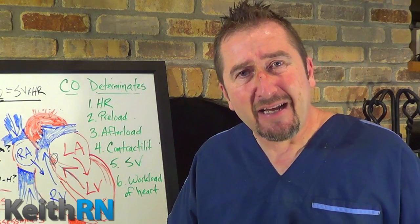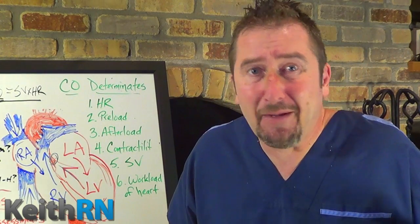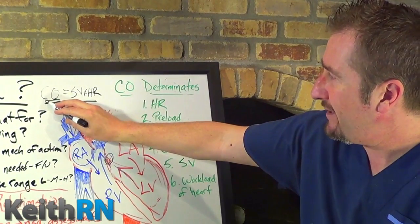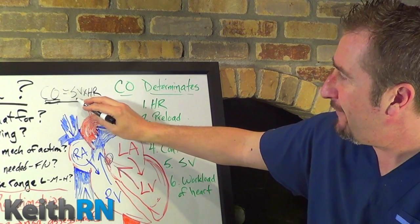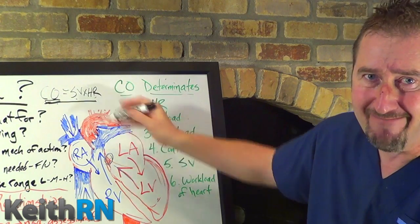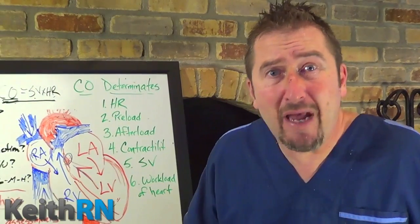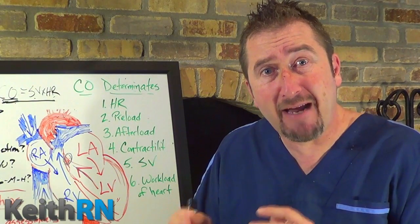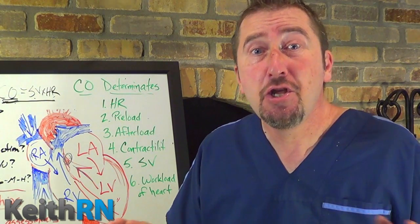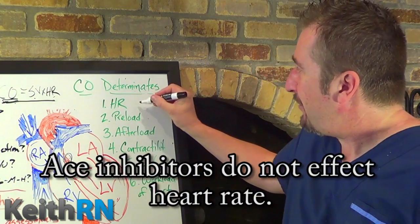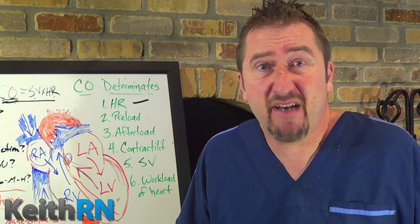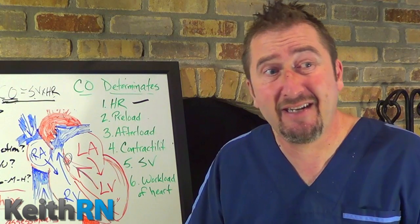Does an ACE inhibitor, like a beta blocker, have any impact on heart rate itself? Cardiac output moment by moment is influenced by stroke volume times heart rate. Does an ACE inhibitor affect heart rate by its mechanism of blocking the conversion of angiotensin one to angiotensin two? The answer is no. Therefore, there is no specific reason to assess heart rate related to ACE inhibitor therapy — it's not going to be affected.